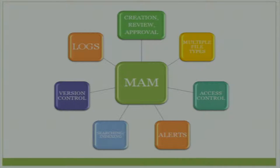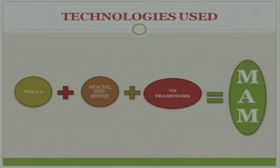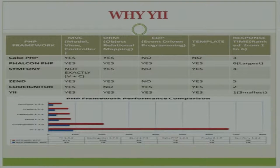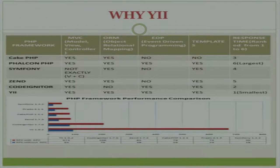These are the technologies we have used. We went for Web 2.0 because we want a system that can manage most things. We use Apache, PHP, and MySQL for database connectivity. The main thing is our Yii framework. Why Yii? We went through every PHP framework and created a comparison chart. CakePHP has most features but doesn't provide event-driven programming. FalconPHP is nice but has too large a response time. Similarly for CodeIgniter and Symfony. Yii provides everything — and the response time is very small, the fastest among all frameworks, so we went with Yii.